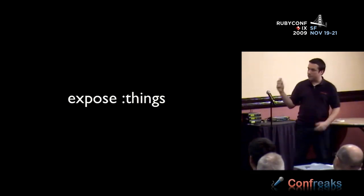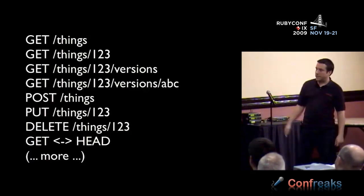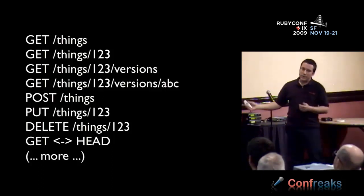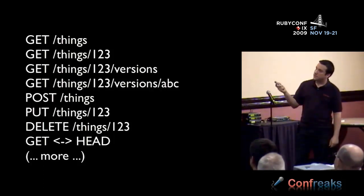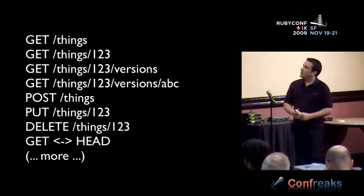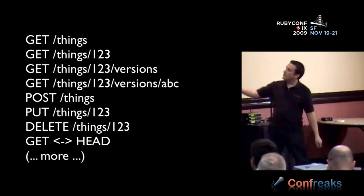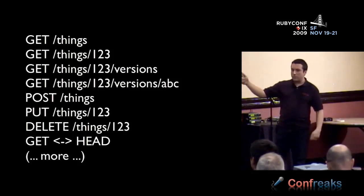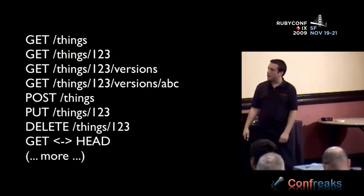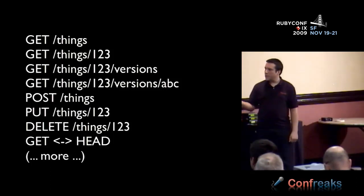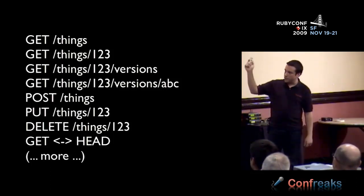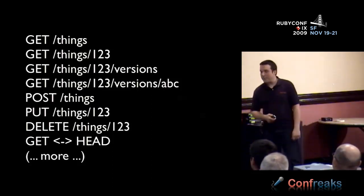Now you automatically get what would otherwise require code generation and duplication in Rails. You can get a collection of things out of the web service, get a specific thing by ID, get all historical versions, even specific versions based on the e-tag. You can POST to create new things, PUT to update a specific thing, DELETE things, and use GET and HEAD interchangeably if you just want metadata about an object.